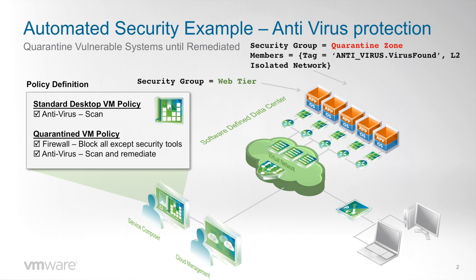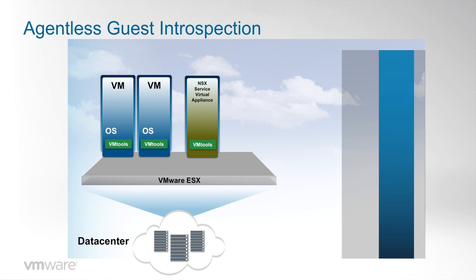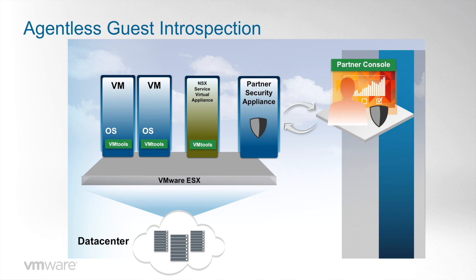For this automation to work, there are a few components required. First, the VMs we want to protect need to be running the VMware tools. Second, we need to deploy an NSX specific VM known as Service Virtual Appliance or Guest Introspection VM, which is responsible for retrieving file activity and information from the protected VMs. Finally, we need to deploy the Security Partner Appliance, which is responsible for doing the file scan and detecting the infections.